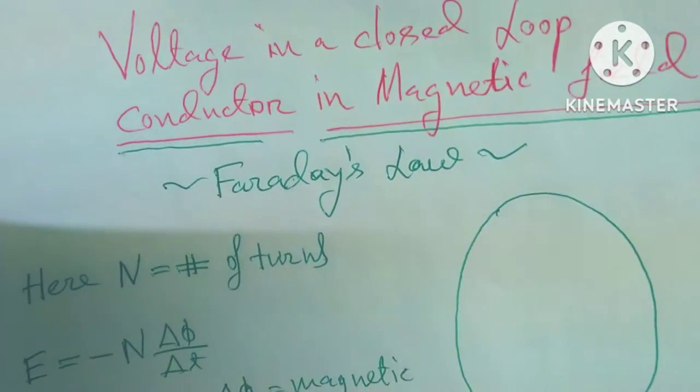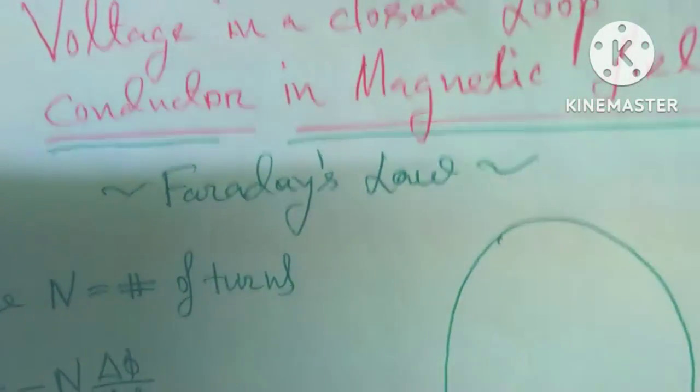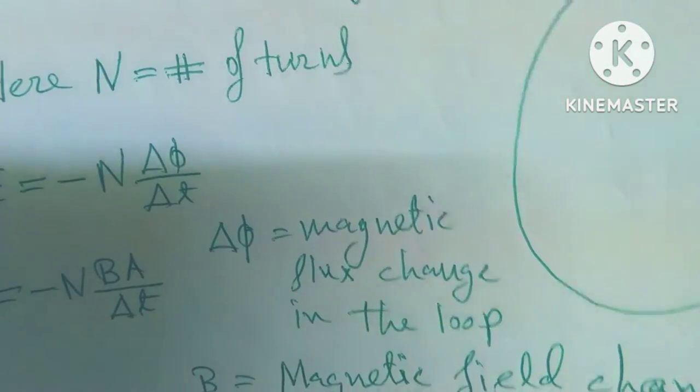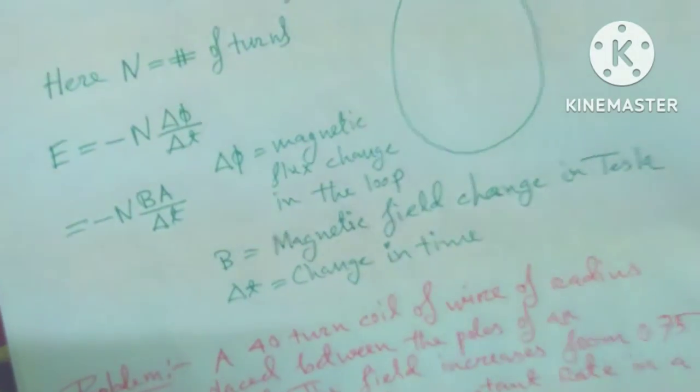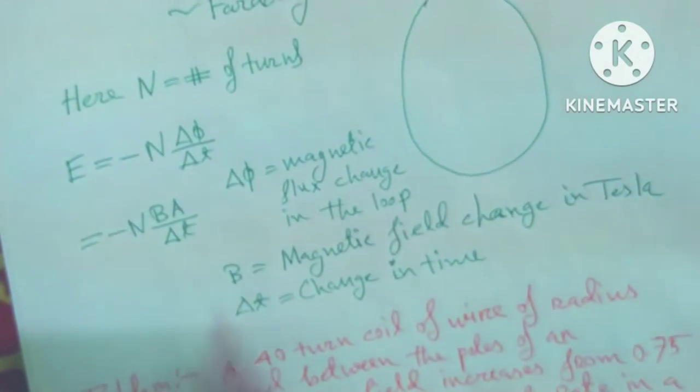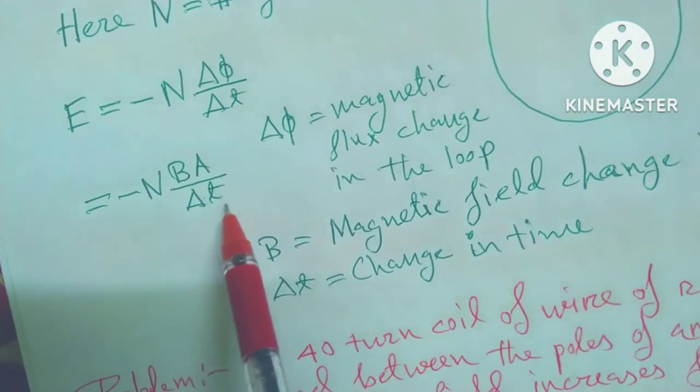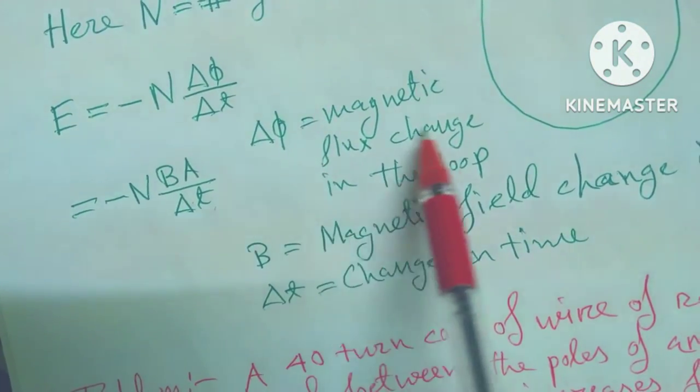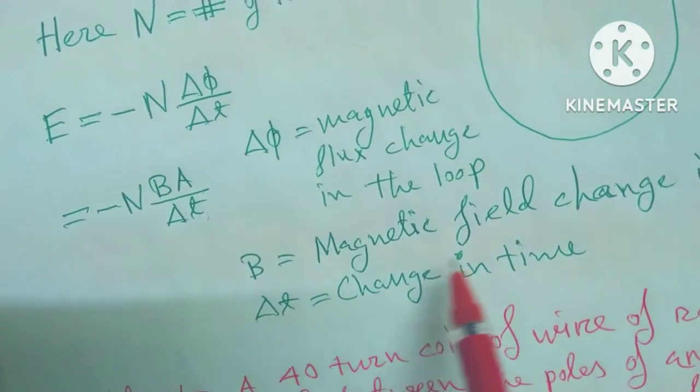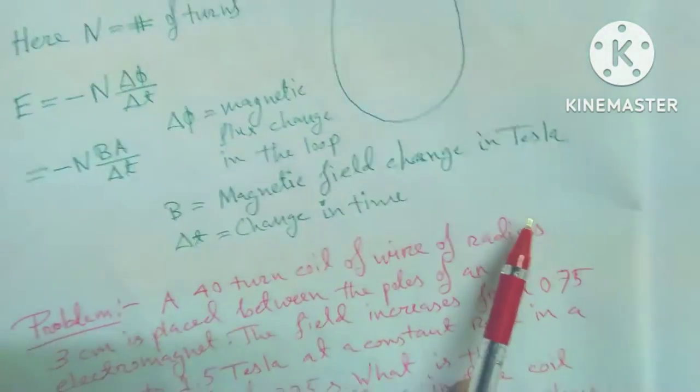Hello dear friends, today's discussion is magnetic field problem, Faraday's law. I have already created a Faraday's laws last video. So we know that E is equal to minus N del phi by del t, or N BA by del t. We already know magnetic flux and magnetic field change, okay. So this is the formula.